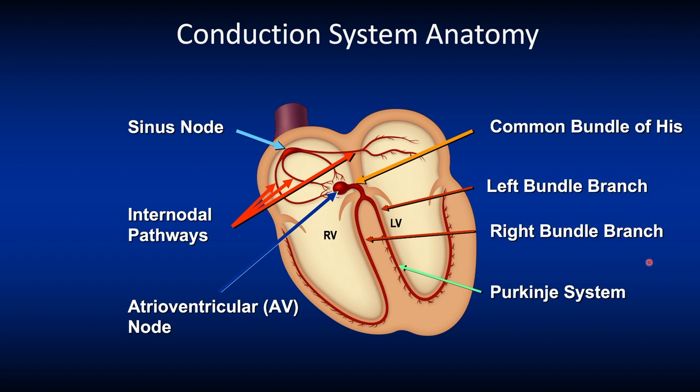The speed of conduction through the ventricular Purkinje Network is rapid, at about 4000 milliseconds. Conduction in the ventricular muscle itself is considerably slower at about 400 milliseconds.